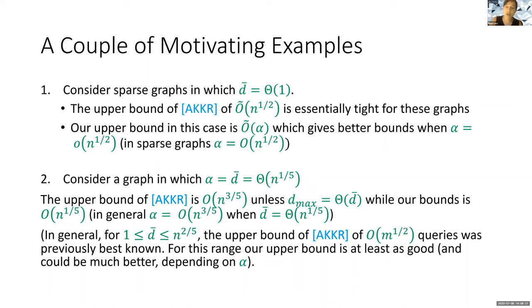Consider another case in which alpha equals the average degree, which equals Θ(n^{1/5}). In this case, the upper bound of Alon et al. is O(n^{3/5}) unless we know that the maximum degree equals Θ of the average degree, while our upper bound is O(n^{1/5}). We know that alpha is O(n^{3/5}) when the average degree is Θ(n^{1/5}), so again our algorithm is not worse. In general, for any average degree between 1 and n^{2/5}, the upper bound of Alon et al. was previously the best known algorithm, with complexity O(√m). For this range, our upper bound is good and could be much better depending on alpha.